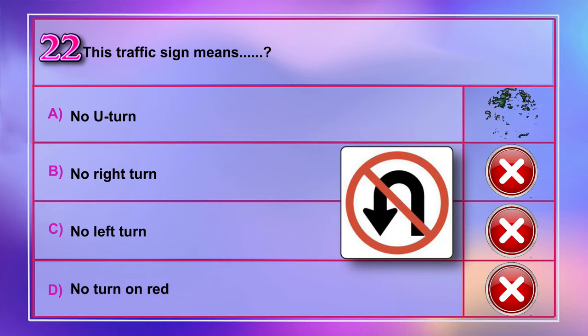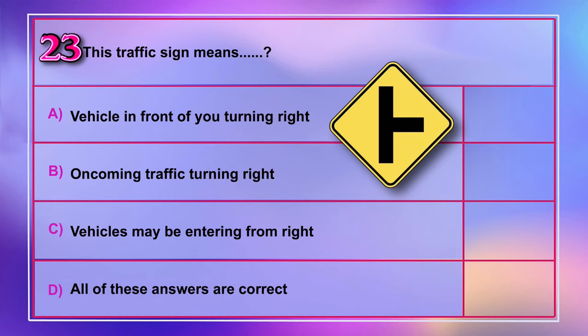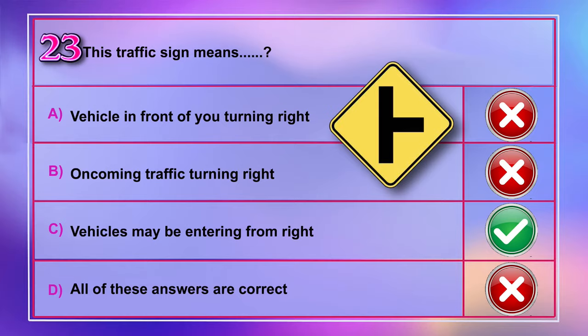Question number 23: This traffic sign means A) vehicle in front of you turning right, B) oncoming traffic turning right, C) vehicles may be entering from the right, D) all of these answers are correct. Correct answer is C: vehicles may be entering from the right.